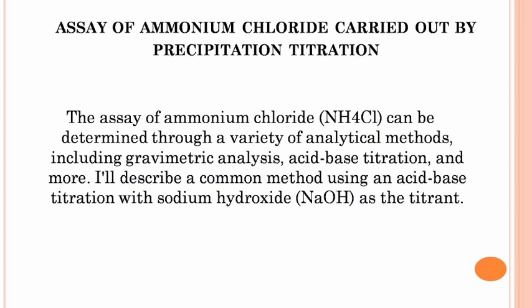The assay of ammonium chloride, NH4Cl, can be determined through a variety of analytical methods, including gravimetric analysis, acid-base titration, and more. Here, I'll describe a common method using an acid-base titration with sodium hydroxide, NaOH, as the titrant.